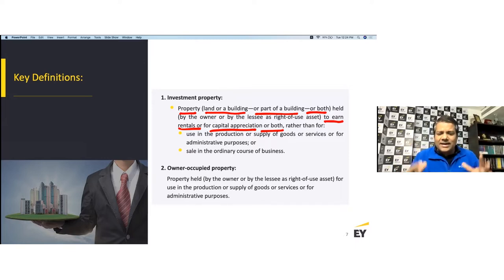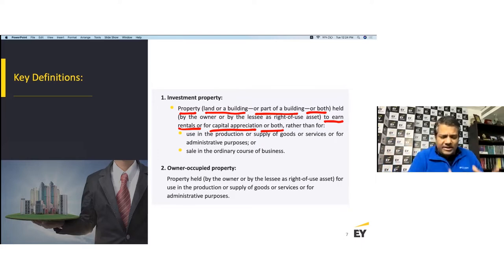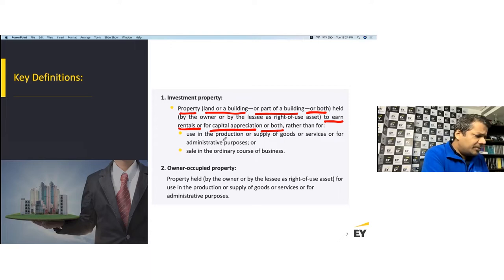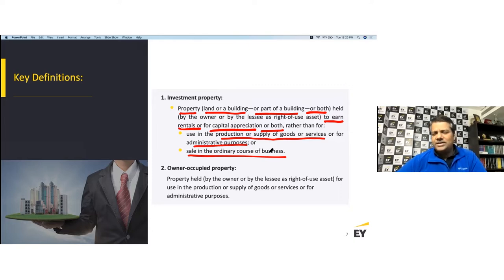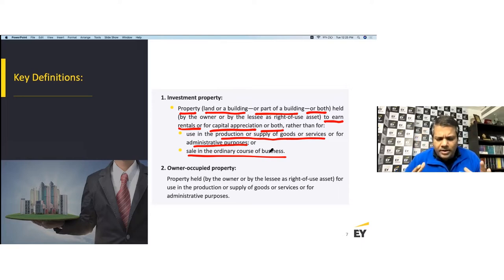Investment property is held to earn rental income or for capital appreciation, rather than being used in the production or supply of goods or services, or for administrative purpose. If you intend to sell in the ordinary course of business, that means it becomes an inventory item under Ind AS 2 — it is not investment property.